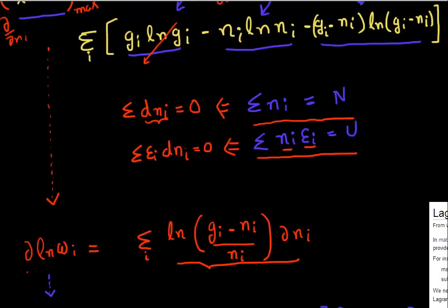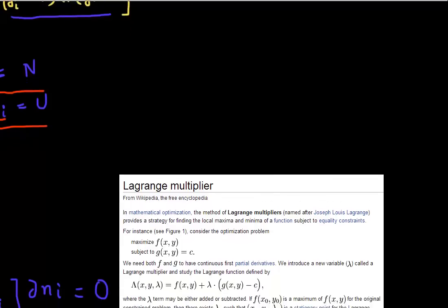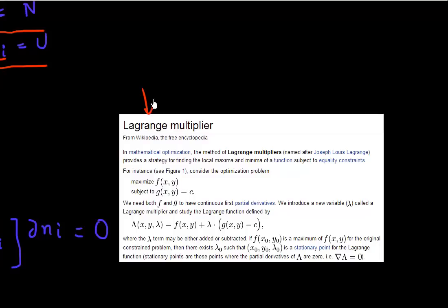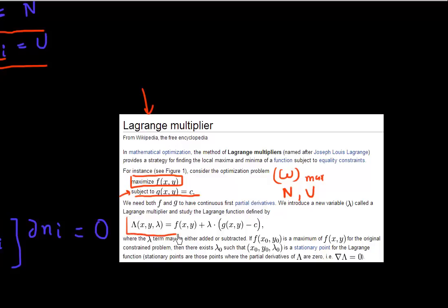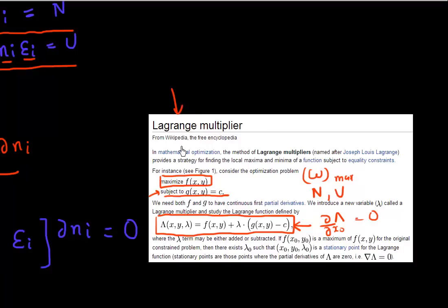Now I use another mathematical relationship called the Lagrange multiplier. It applies to exactly the situation I have: I want to maximize one function, given the constraints that other functions are constant. I want to maximize W, while knowing that the total number of particles and their total energy is constant. There is a Wikipedia page where you can learn more about Lagrange multipliers.